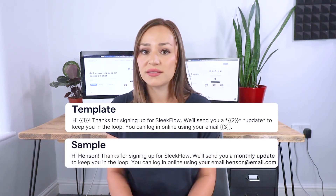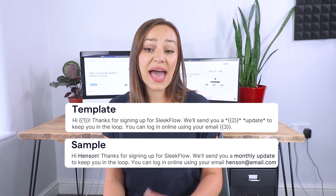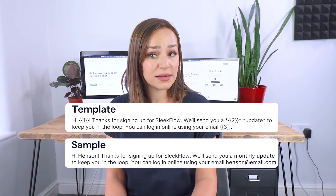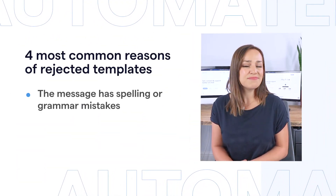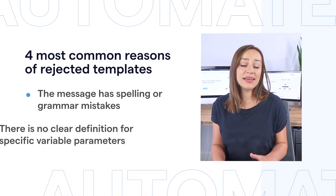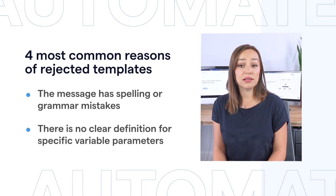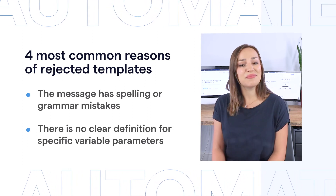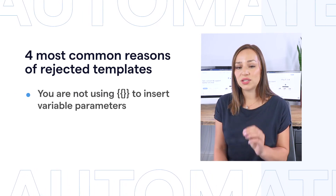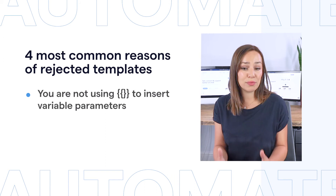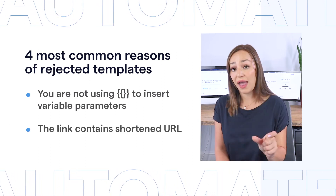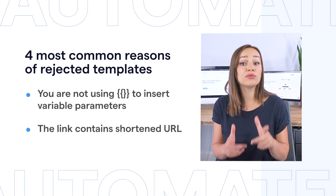It usually takes three hours to one day for template approval. Keep in mind that you'll need to follow WhatsApp requirements, including making sure that your variable parameters, translations, and links in the messages are correct, and attach a sample while submitting your template. Some of the common mistakes are: the message has spelling or grammar mistakes that make it look like spam or a hoax; there is no clear definition for specific variable parameters, like the type of media you plan to send in a media message; you are not using double curly brackets to insert variable parameters; or the link contains a shortened URL, or the URL domain does not actually belong to your business.